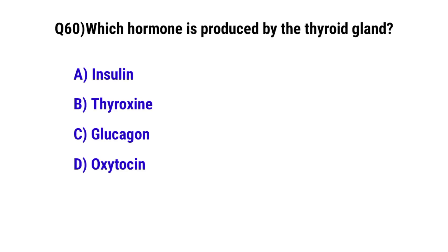Question No. 60: Which hormone is produced by the thyroid gland? The correct option is B: thyroxine.